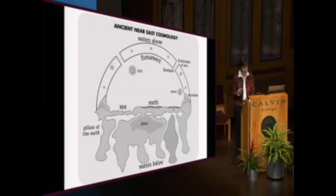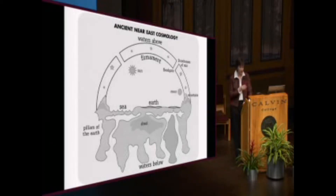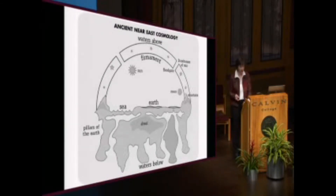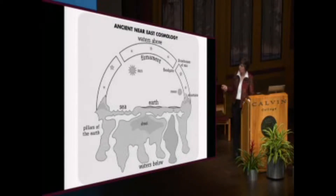They tended to arrange events thematically rather than chronologically, and they tended to state lengths of time using numerology rather than strict calendars and clocks. They also didn't view the physical world as we view it today. They believed that the world began as a dark, watery chaos and became a flat earth and a solid dome sky. They believed the sky was actually solid and holding up an ocean of water above the sky — that's where rain comes from.